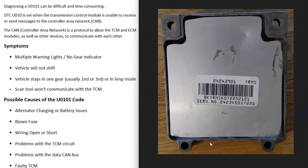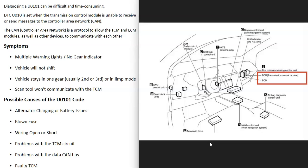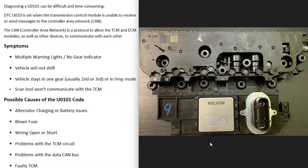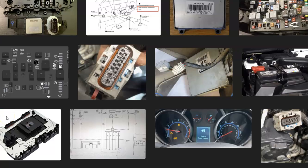Of course, it could also be a faulty TCM — the transmission control module might have failed. These modules are located differently depending on the vehicle: sometimes behind the glove box, sometimes in the engine compartment, and sometimes even inside the transmission. While the transmission control module doesn't usually fail — most of the time it's going to be a wiring issue — it is possible that it's gone bad and just needs to be replaced.